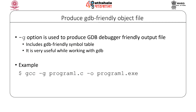To generate a GDB-friendly object file, use the minus g option: gcc -g program1.c -o program1.exe. The minus g option produces output that includes a GDB-friendly symbol table, which is very useful while working with the GDB debugger at the time of the debugging process.